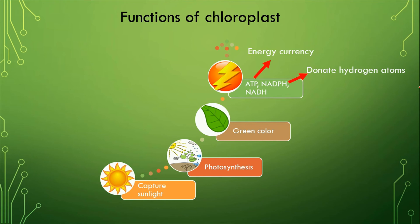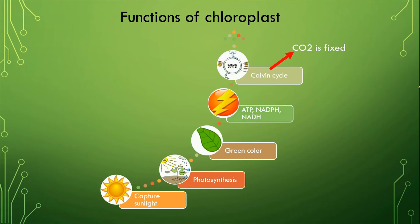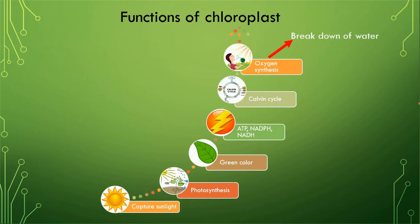Another function of chloroplast is that the Calvin cycle, which is a part of photosynthesis, takes place in the chloroplast. The importance of the Calvin cycle is that it captures carbon dioxide from the air and fixes the carbon dioxide to form glucose molecules.